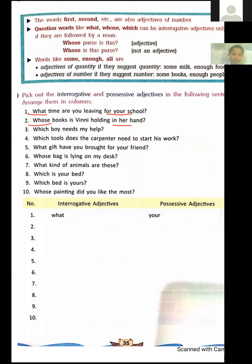Third sentence: 'Which boy needs my help?' — Which is followed by the noun boy, so it is an interrogative adjective. My is a possessive adjective. Fourth sentence: 'Which tools does the carpenter need to start his work?' — Which is followed by the noun tools, so it is an interrogative adjective. His is a possessive adjective.